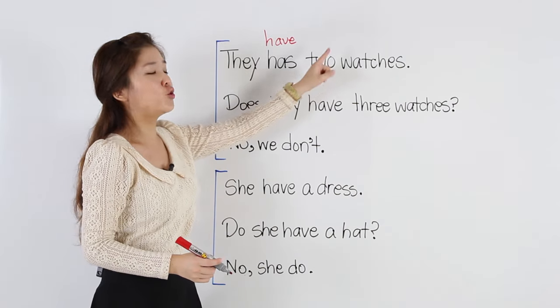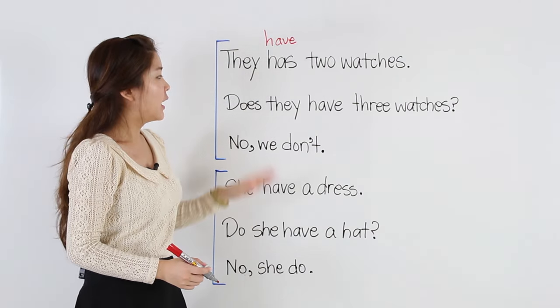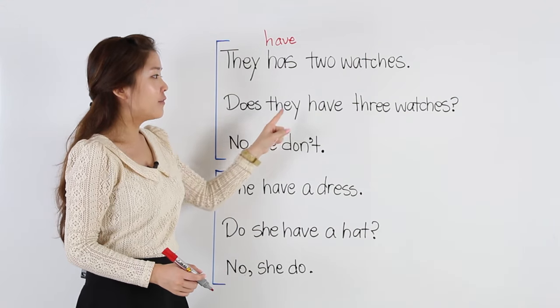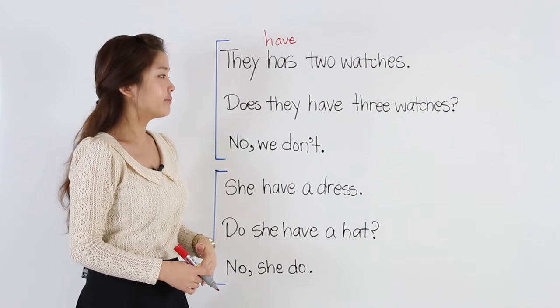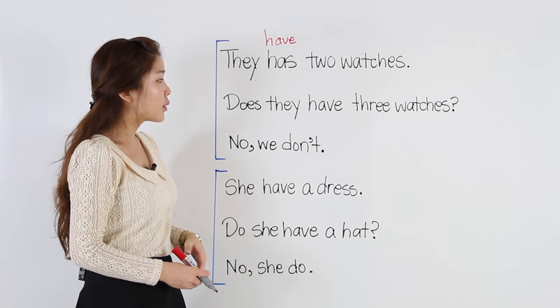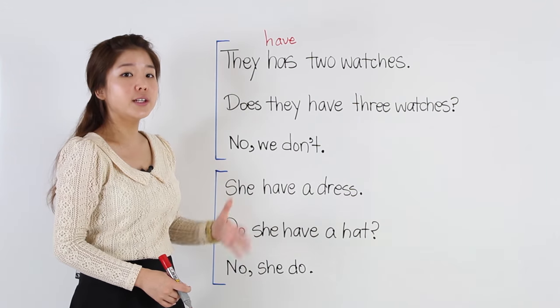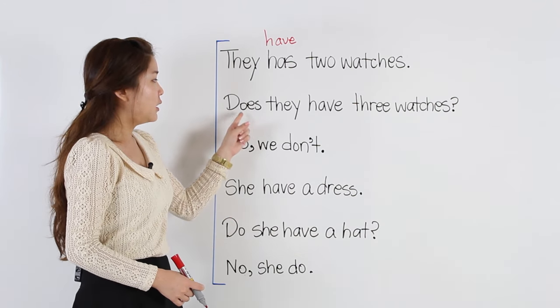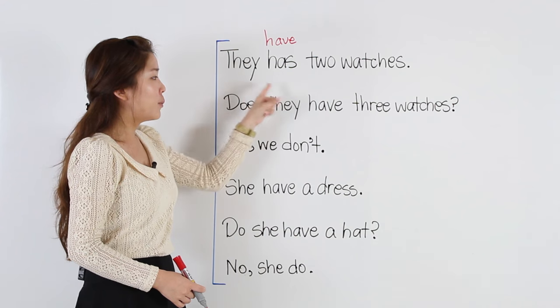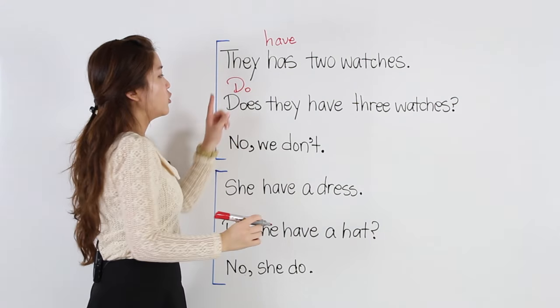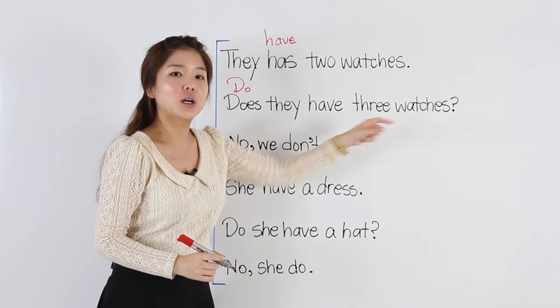The next one is a question. Does they have three watches? Remember, when we start a question, we have to use do or does. Here, we have does, but remember, for they, we begin with do. Do they have three watches?